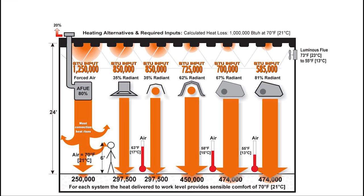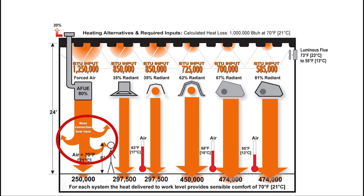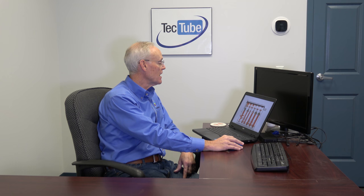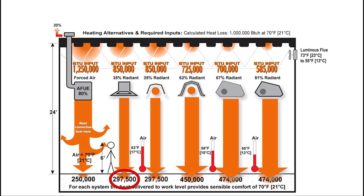You can see a standard unit here with an AFU of 80 to 82 percent. If I have a calculated heat loss of one million BTUs, because of that 80 percent efficiency we have to use inputs of 1,250,000 BTUs — and you can see that a lot of the heat is going up toward the ceiling. To get 250,000 BTUs down to the floor level at an ambient temperature of 70 degrees, you need inputs of 1,250,000. With the industry standard of 35 percent radiant on high intensity, you can reduce that load by 15 percent, so you're only selecting an input of 850,000 — and you get quite a bit more heat down at the floor level.